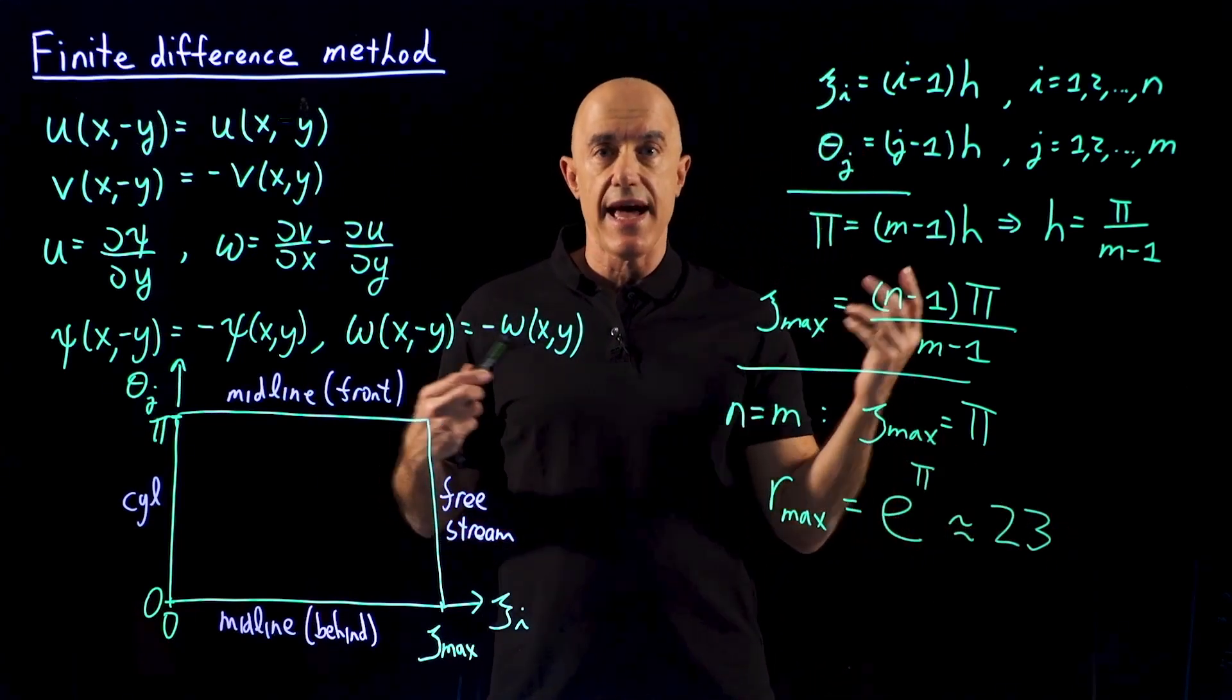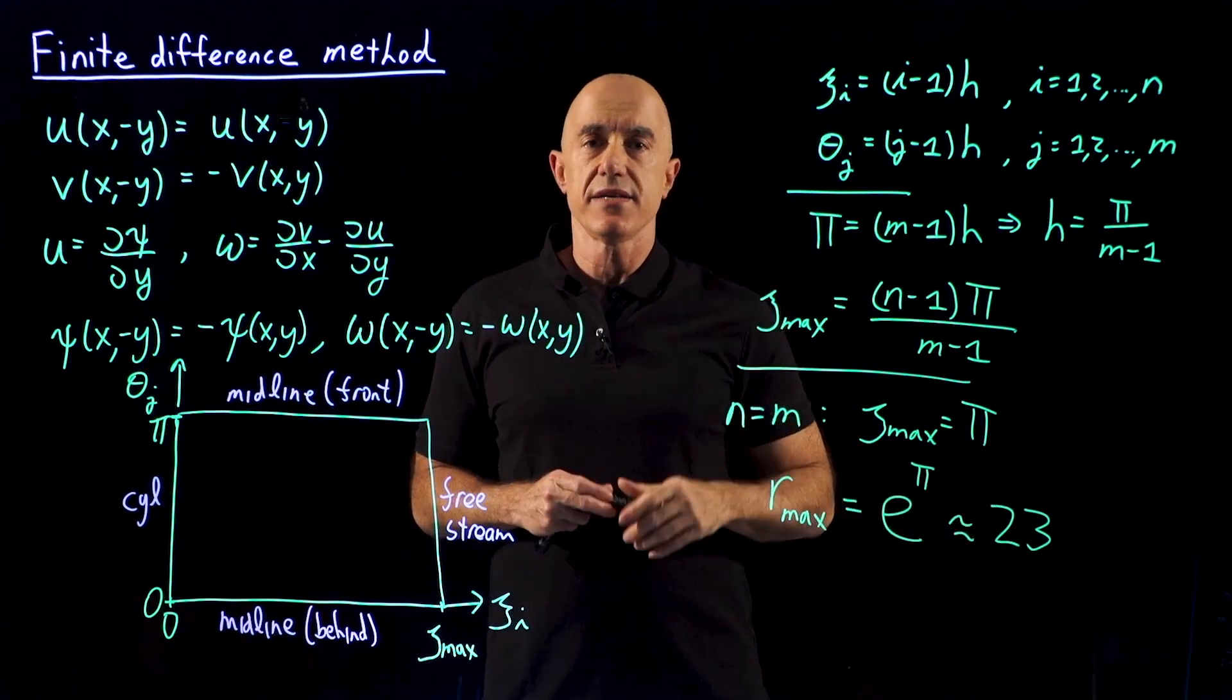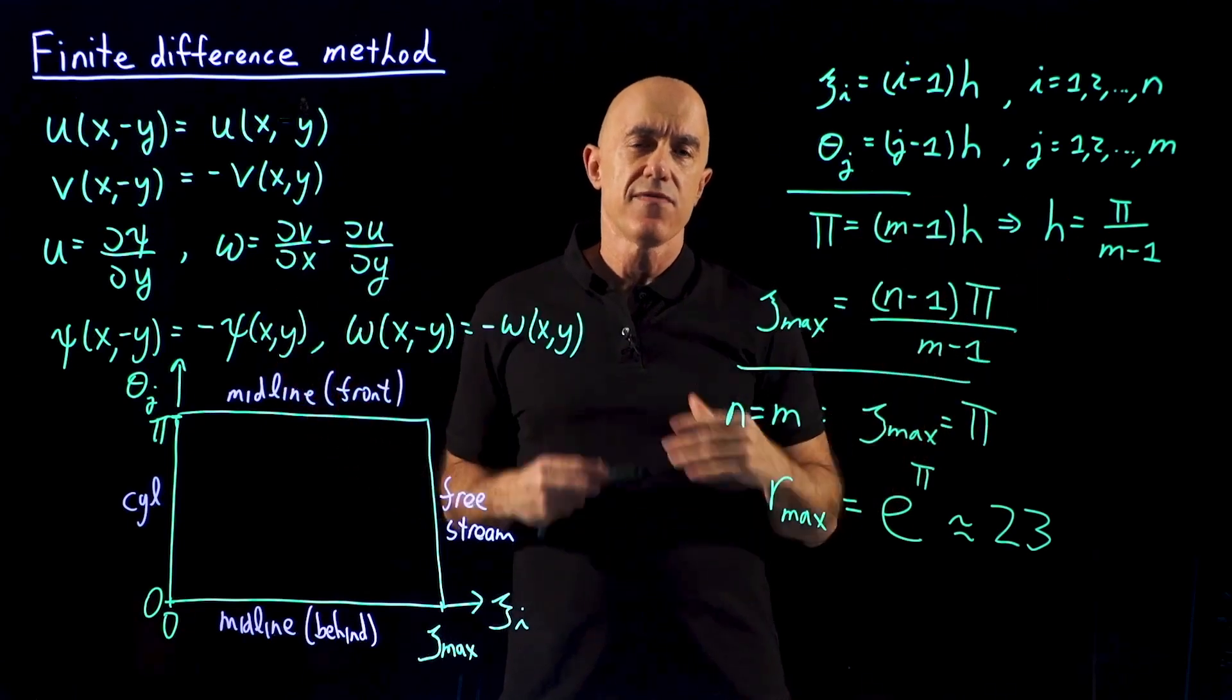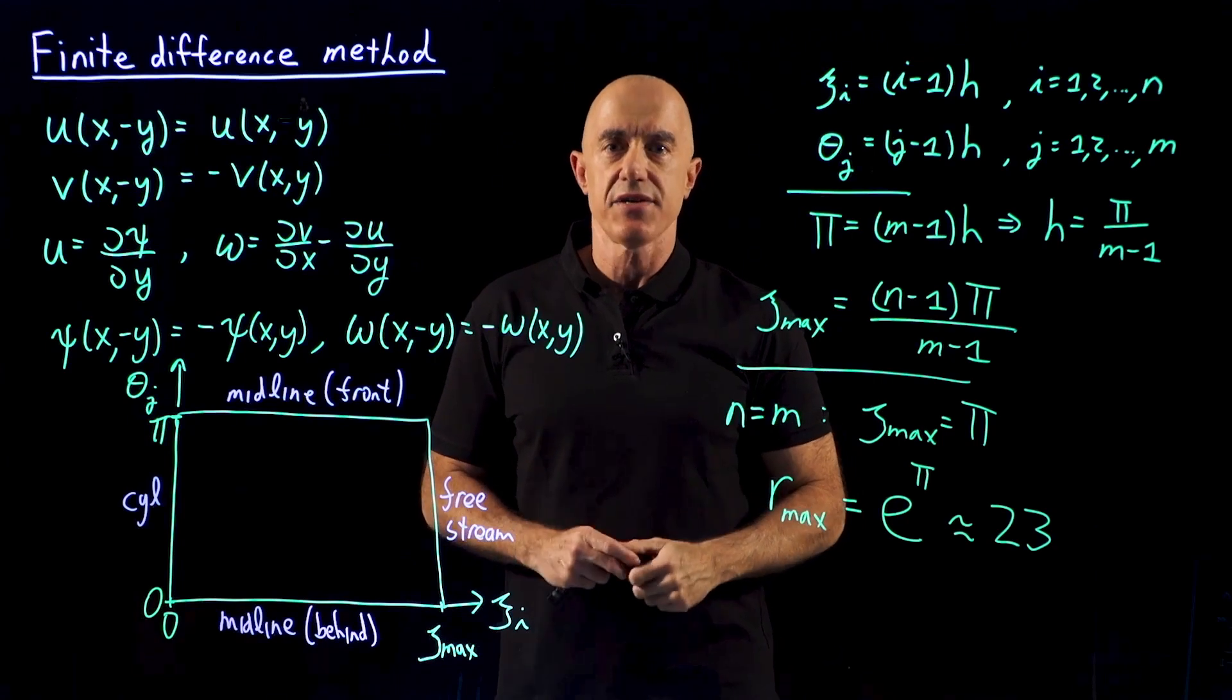So if we choose n equals m, our calculation will be 23 radii of the cylinder. For a low Reynolds number, that's pretty sufficient to have an accurate calculation.